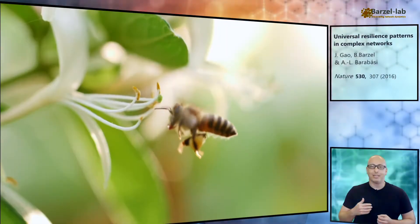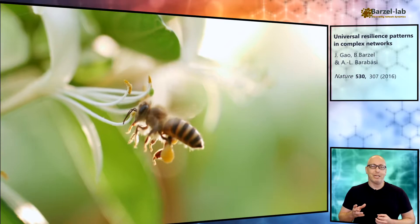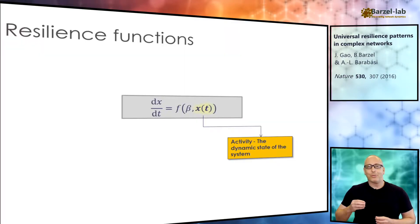To understand this, let us begin with a simple description of resilience. Think about maybe an ecological or a biological system. We characterize it by its activity, x. This x can represent, for example, the level of biodiversity in an ecosystem or the growth rate of a cell. Then we track this activity through a differential equation.